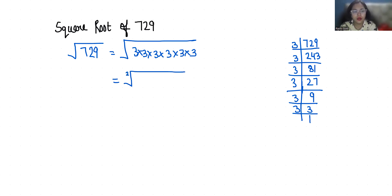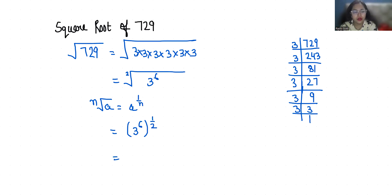According to the exponent rule, the n-th root of a is equal to a power 1 by n. So we have 3 power 6, power 1 by 2. Another exponent rule: x power m, power n, is equal to x power m times n.